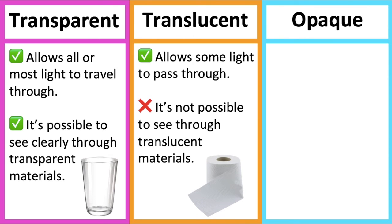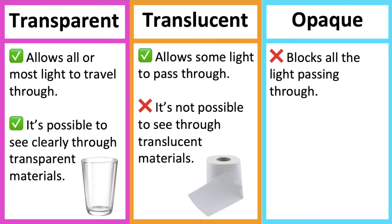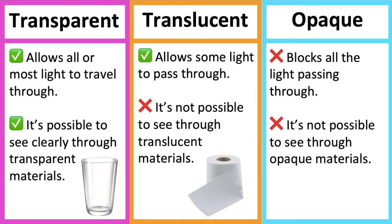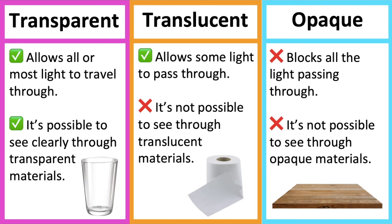Opaque refers to a material that blocks all light passing through. It's not possible to see through opaque materials at all. For example, wood. Opaque materials create shadows when they block light.